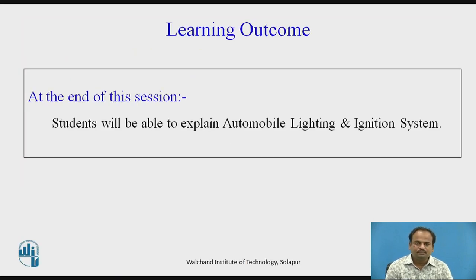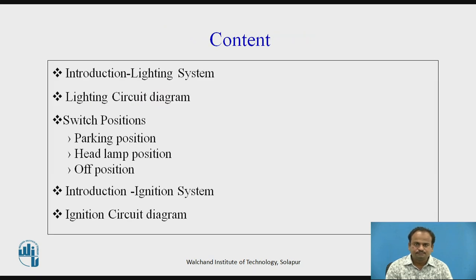Learning Outcome: At the end of this session, students will be able to explain Automobile Lighting and Ignition System. In this particular session, we are going to discuss Introduction of Lighting System, Lighting Circuit Diagram and how it works, then Different Switch Positions of Lighting System — that is Parking Position, Headlamp Position, Off Position — then Introduction of Ignition System, and Ignition Circuit Diagram and its working.